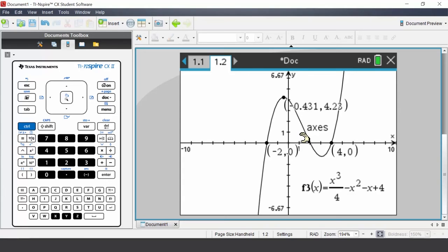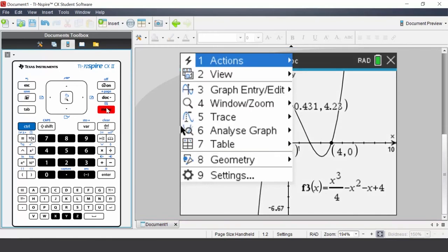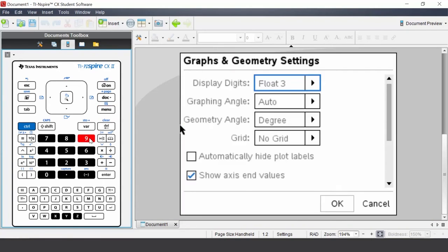You have decimals with your values. You may wish to change the settings. Press menu, select settings. You will see the display digits is 3. You can modify this to suit your needs. Press escape.